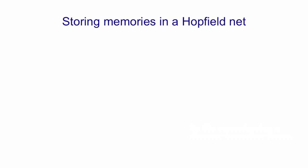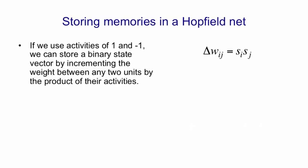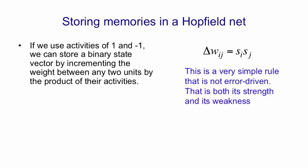The storage rule for memories in a Hopfield net is very simple. The idea is, if we use activities of 1 and minus 1, that we can store a binary state vector by just incrementing the weights between any two units by the product of their activities. So it's a very simple rule, shown on the right. One nice thing about this rule is that you just go through the data once and you're done. So it really is a genuine online rule. That's because it's not error-driven. You're not comparing what you would have predicted with what the right answer is, and then making small adjustments. The fact that it's not an error-correction rule is both its strength and its weakness. It means it can be online, but as we'll see later, it also means it's not a very efficient way to store things.